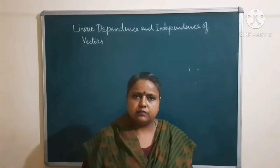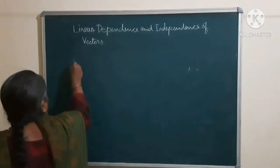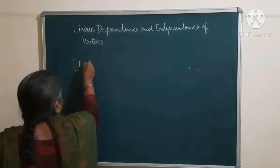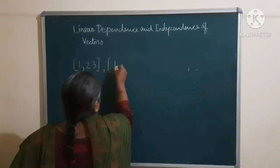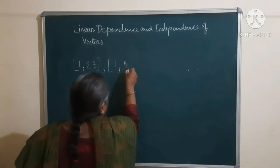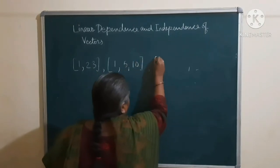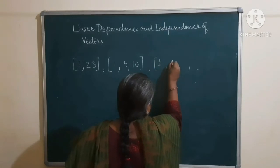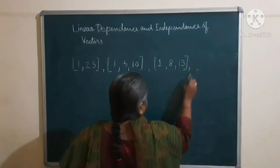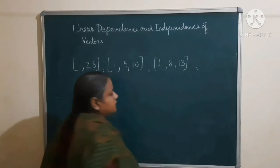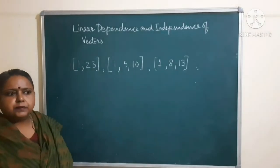For example, we consider 3 vectors: (1, 2, 3), this is vector 1; (1, 5, 10), this is vector 2; and (1, 8, 13), this is vector 3. We check whether these vectors are linearly independent or not.